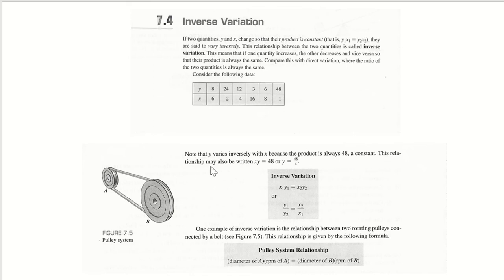This relationship may also be written as xy equals 48 or y equals 48 over x. Inverse variation can be written as x1 times y1 equals x2 times y2 or y1 over y2 equals x2 over x1.